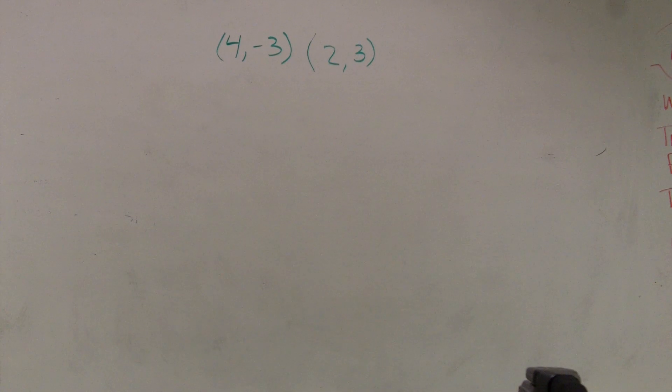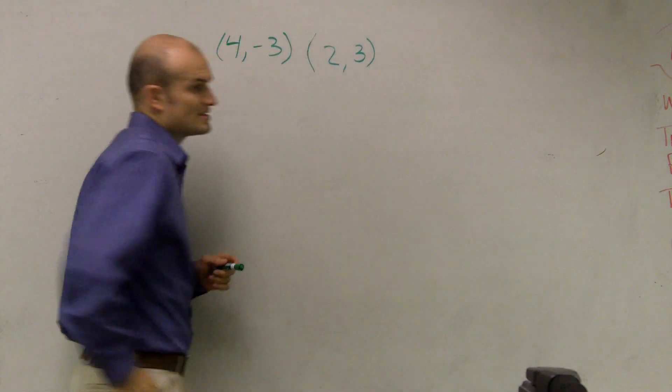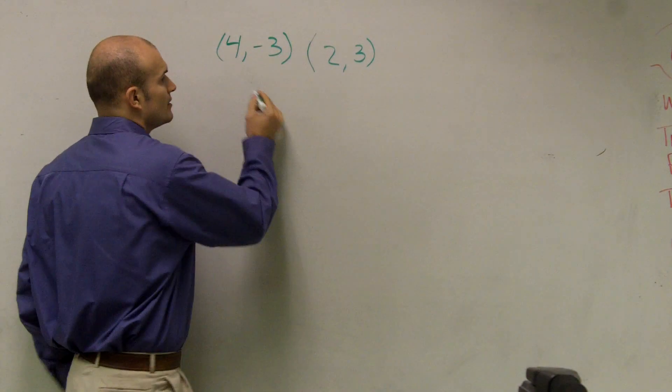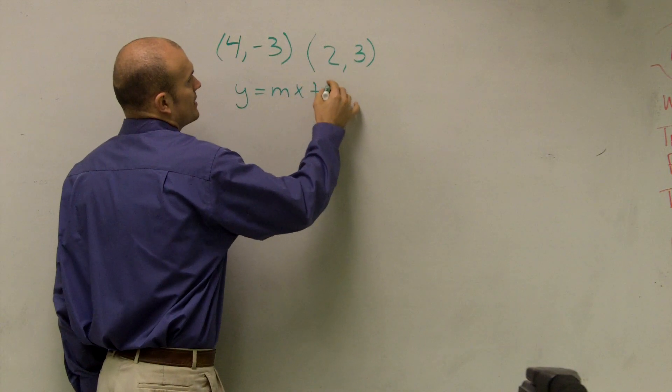I always have it up there just in case you want to check. So we're given two points, and we need to find the equation of the line in the form y equals mx plus b.